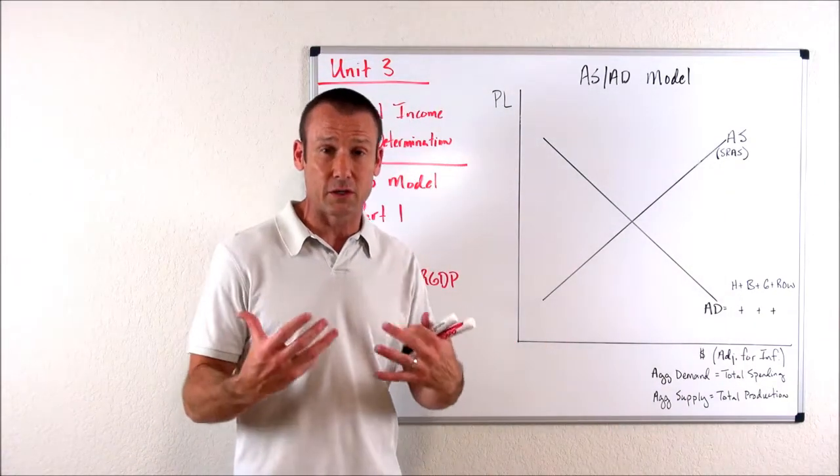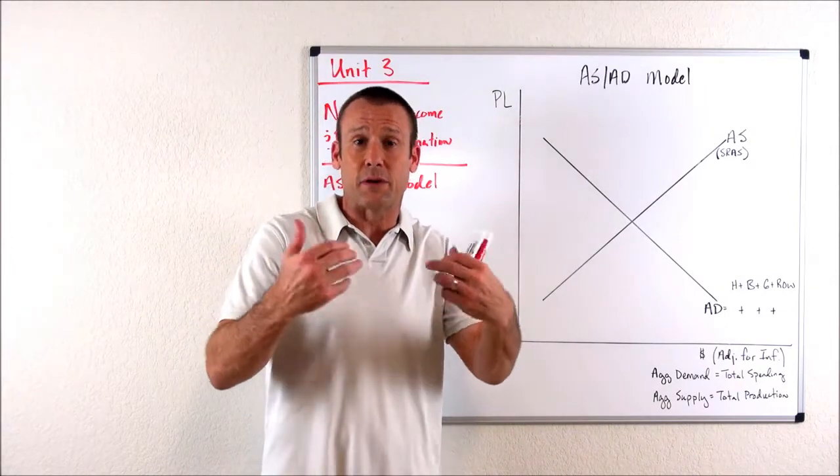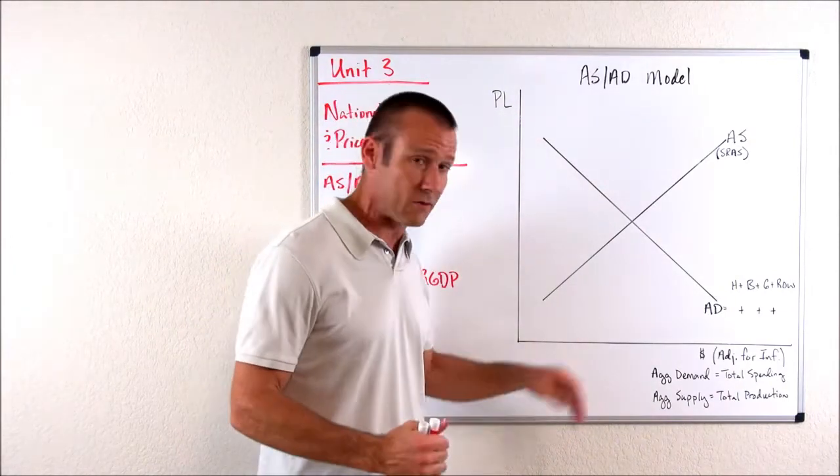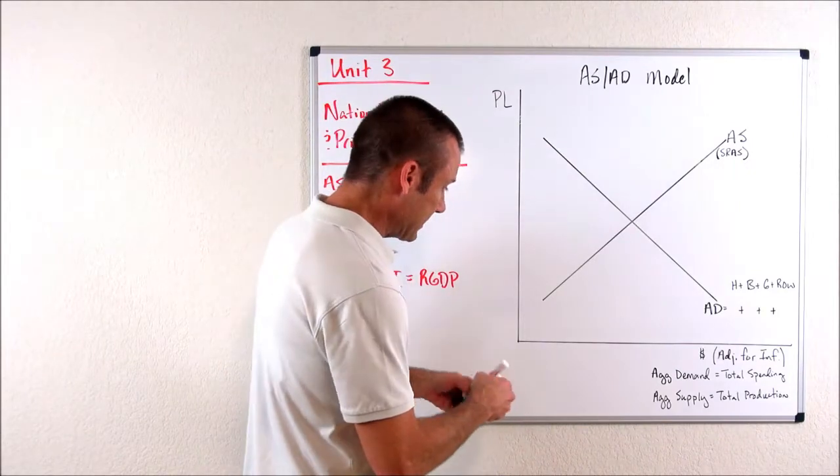So anytime you think of this axis, the horizontal axis, what I want you to understand is there's a measurement. It's a monetary measurement. A monetary value is what we've got right here, like right here in the model.